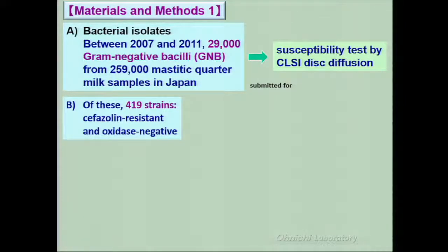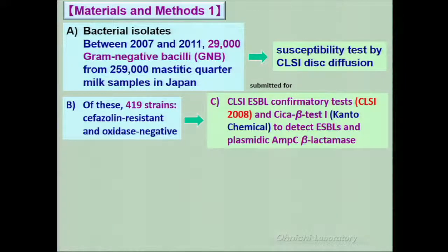Of these, 419 strains were cephalosporin-resistant and oxidase-negative. These strains were submitted for CLSI ESBL confirmatory tests and CHICA-beta test to detect ESBLs and plasmidic AmpC beta-lactamase.